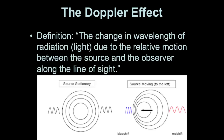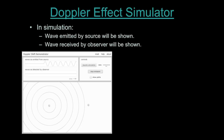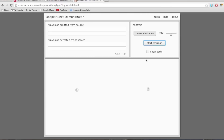Let me show you what that means with a simulation. There's a source and an observer: the top wave is the one emitted by the source, and the waves detected by the observer are shown on the bottom row. I'll be able to control the rate at which waves are emitted, and whether the source and observer are moving towards or away from each other, or stationary. The waves can be sound waves, water waves, or light waves.